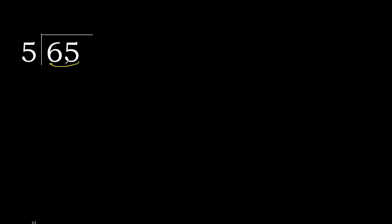65 divided by 5. 6 is not less, so we work with 6. 5 multiplied by which number is nearest to 6 but not greater? 5 multiplied by 2 is 10 — that is greater. 5 multiplied by 1 is 5 — it is not greater. 6 minus 5 is 1.